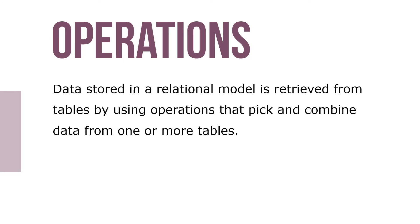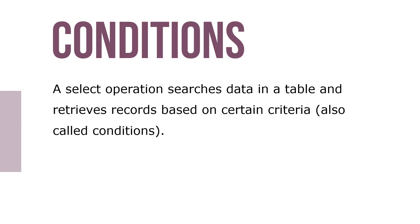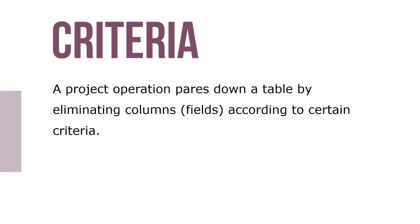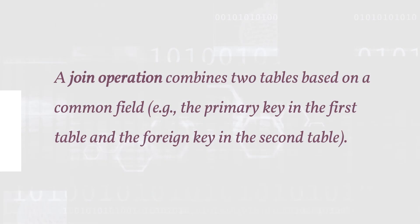Data stored in a relational model is retrieved from tables by using operations that pick and combine data from more than one table. A select operation searches a table and retrieves records based on certain criteria, also called conditions. A project operation pares down a table by eliminating columns or fields according to certain criteria. A join operation combines two tables based on a common field, like the primary key in the first table and the foreign key in the second table.